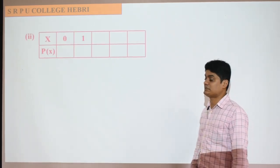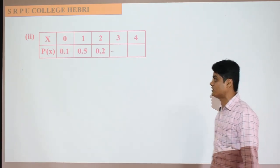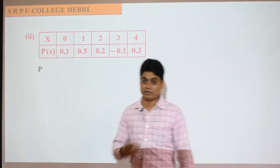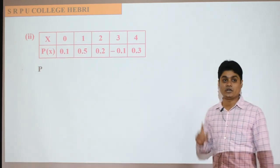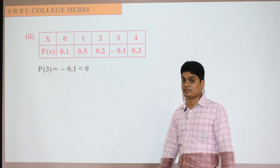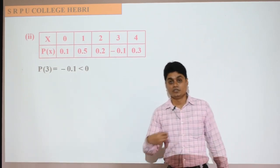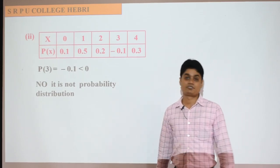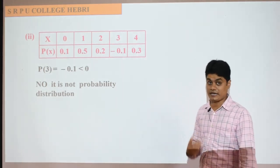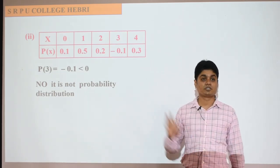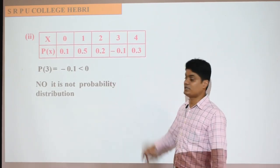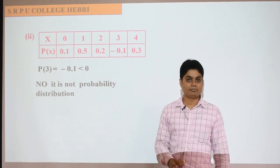For the next table, you have to tell whether the given distribution is a probability distribution or not. Here, we have one probability which is negative. You know, the probability of each element in the second row must always be greater than zero and less than one. Here, the probability of x equal to 3 is minus 0.1. This is definitely not allowed in any probability distribution. So this distribution is not a probability distribution because there is an entry which is negative. If any probability of one random variable is negative, it is not a probability distribution.